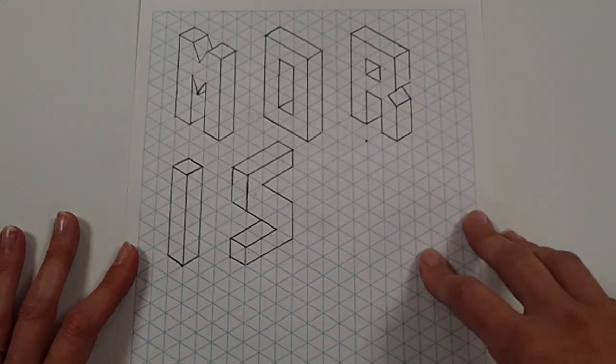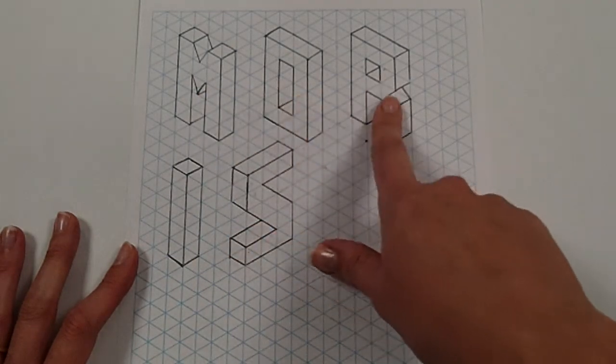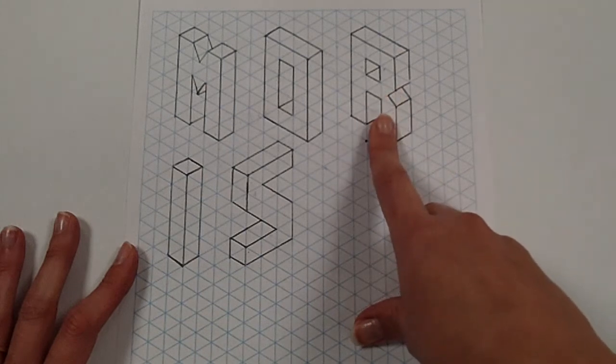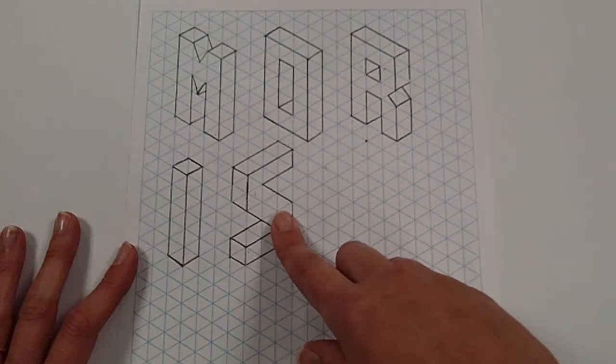Now see my initials are M-O-R-R-I-S and you can see M-O-R-R. Now I've only repeated the R once, there's no need to repeat it again, so just the once, then the I and the S.